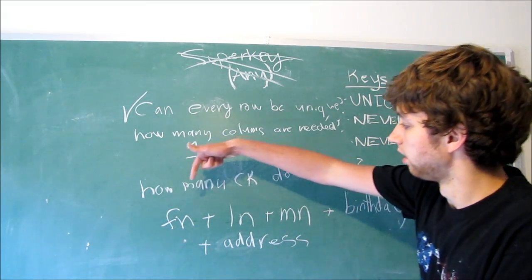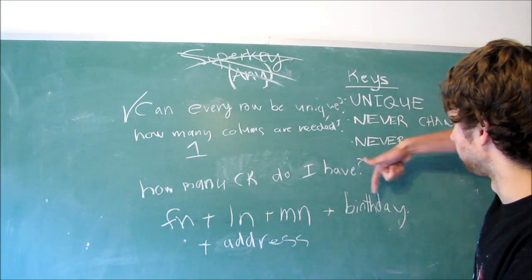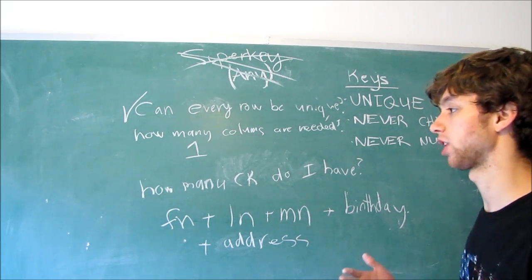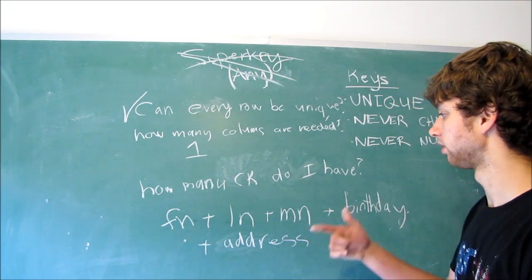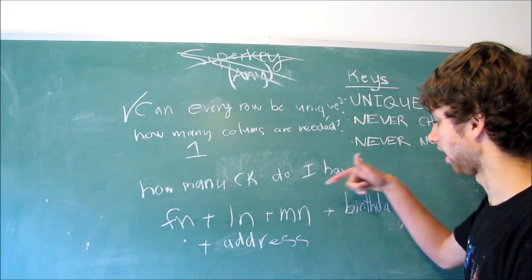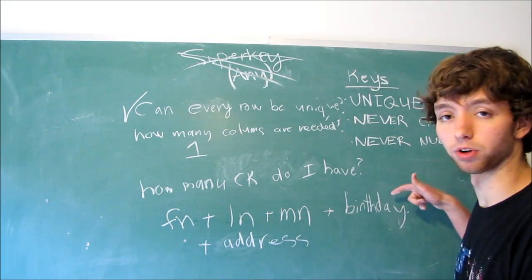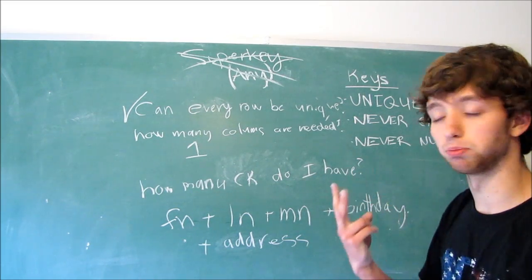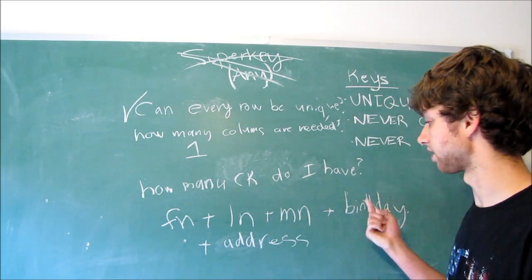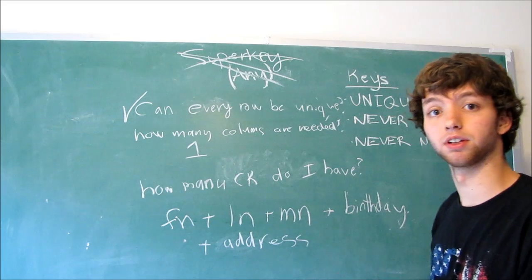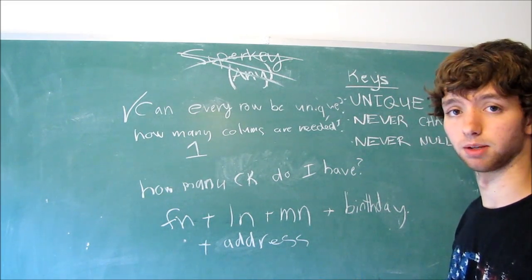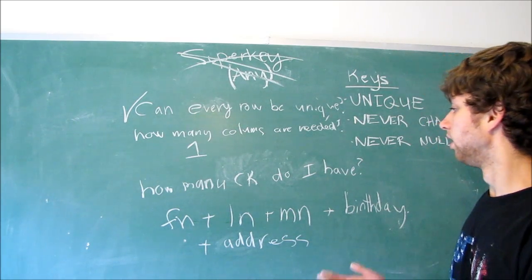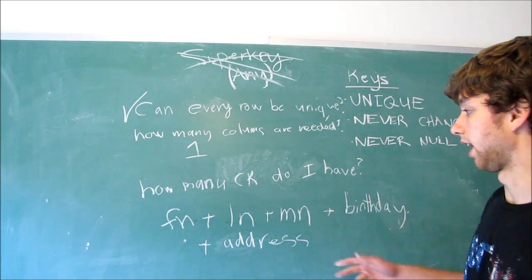So now you have to find someone with the same first name, last name, middle name, and birthday. Very rare, still possible. So then we could add address. This could be a candidate key. What are the chances of a person living at a certain location, born on a certain day, having the same name, same birthday, and living at the same place? Unless you had twins and you named them the same thing. That could be a candidate key. Is it the best candidate key? Probably not.